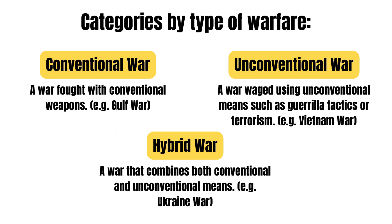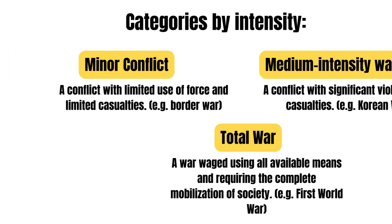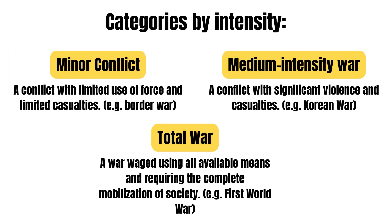Hybrid wars combine both conventional and unconventional means — for example, the Ukraine War. You can also categorize wars by intensity. A minor conflict involves limited use of force and limited casualties — for example, a border war.